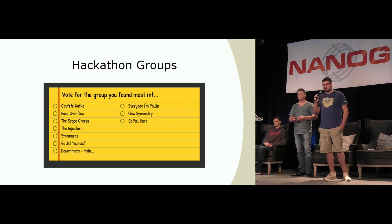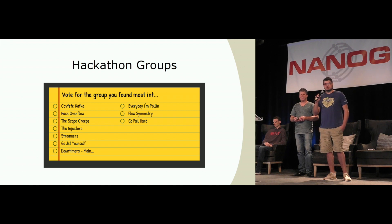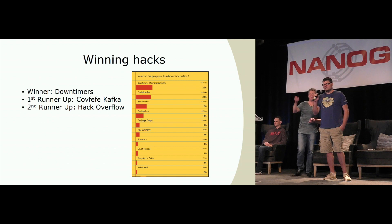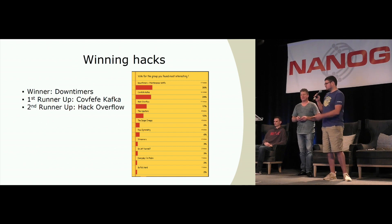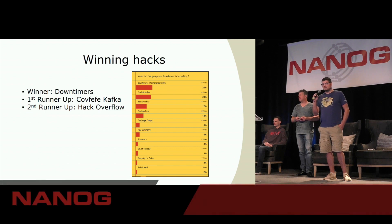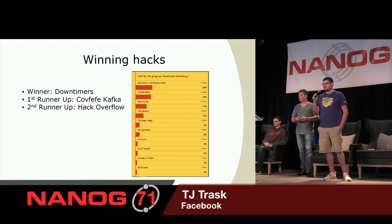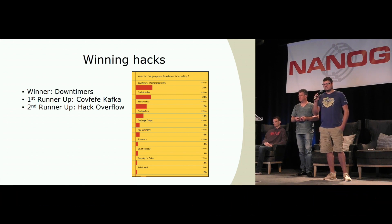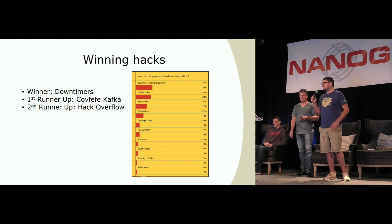The groups were: Kafefe Kafka, Hack Overflow, the Scope Creeps, the Injectors, Streamers, Go Jet Yourself, the Down Timers, Every Day I'm Polling, Flow Symmetry, and Go Fail Hard. The winners are the Down Timers — they'll present shortly. Kafefe Kafka came in as first runner-up and Hack Overflow as second runner-up. Way down at the bottom is Go Fail Hard as last — that was my group. It was pretty awesome.